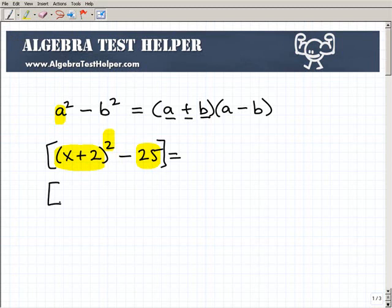This is x plus 2 squared, and then 25 is the same thing as 5 squared. So I can write this as x plus 2 squared minus 5 squared. Once again, we have the difference of two squares, so we have to be really careful here when we do this. This is our a and this is our b.